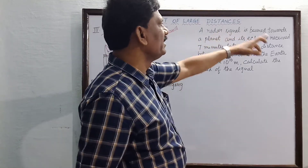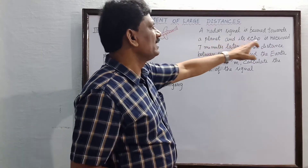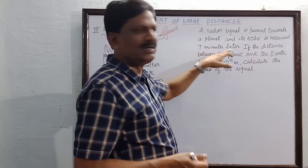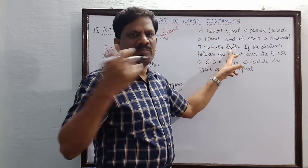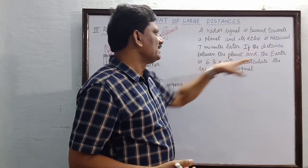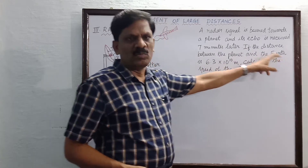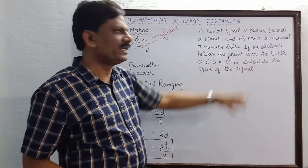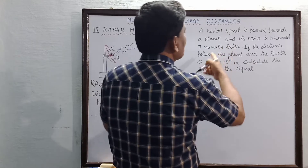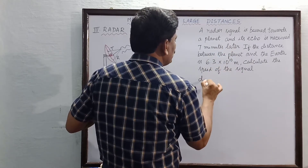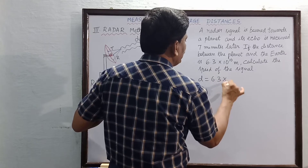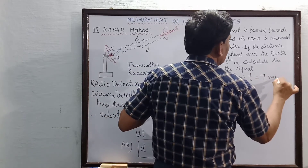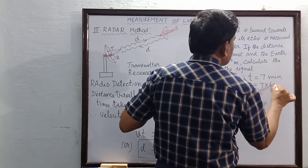Here is a numerical problem: A radar signal is beamed towards a planet and its echo — the reflected wave is called an echo — is received seven minutes later. The time taken to go and come back is seven minutes. The distance between the planet and the Earth is d = 6.3 × 10¹⁰ meters. Calculate the speed of the signal. Given: d = 6.3 × 10¹⁰ m and t = 7 minutes = 7 × 60 = 420 seconds.